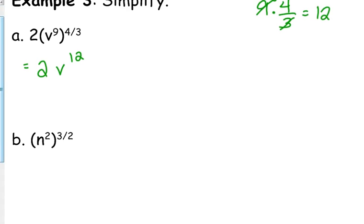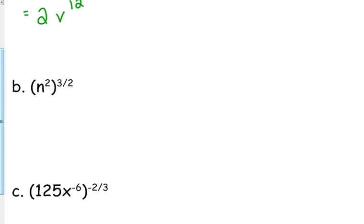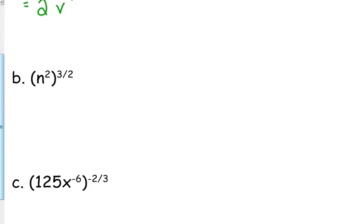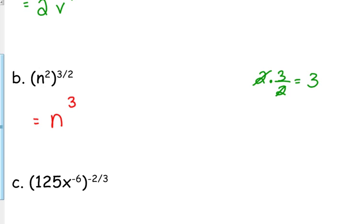This next one: n squared raised to the 3 halves — power raised to a power, we multiply — so 2 times 3 halves, the 2s cancel, we're just left with 3. So this is simply n cubed. These have all turned out to have whole number exponents.